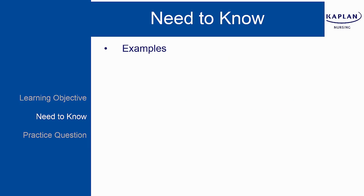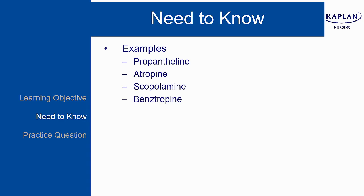Examples of anticholinergics include propanthelene, atropine, scopolamine, benztropine, and belladonna.